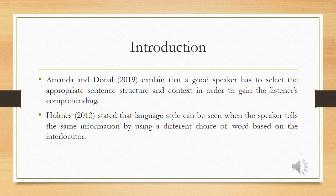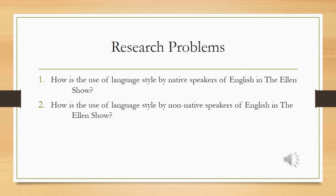Related to Holmes 2013, language style can be seen when the speaker tells the same information by using a different choice of word based on the interlocutor. Here, the speaker uses language style based on whom they are speaking to and where they are speaking to. It's not changing the structure of the speaker's sentence, but it changes the choice of word based on the interlocutor's position.